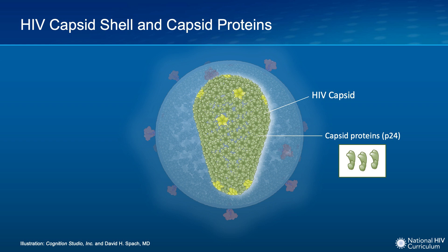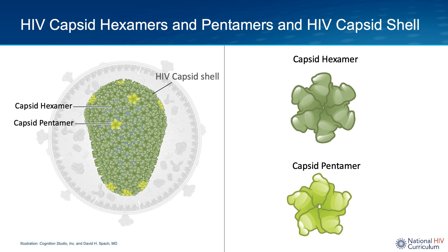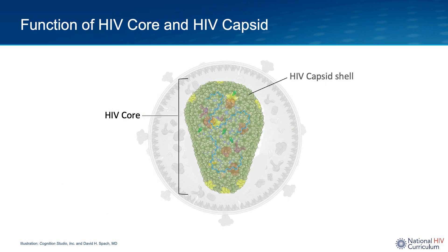The HIV capsid shell consists of about 1,500 HIV capsid proteins that spontaneously assemble to form a closed cone-shaped lattice. These capsid proteins are commonly referred to as P24 proteins. The capsid proteins that form the capsid shell are predominantly linked together as groups of six proteins, referred to as capsid hexamers. Less commonly, groups of five are linked together as pentamers. The main function of the outer capsid shell is to surround and protect critical HIV components needed for HIV replication inside the host cell.